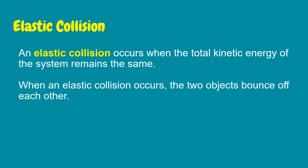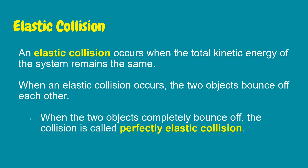When an elastic collision occurs, the two objects bounce off each other. When the two objects completely bounce off, the collision is called a perfectly elastic collision.